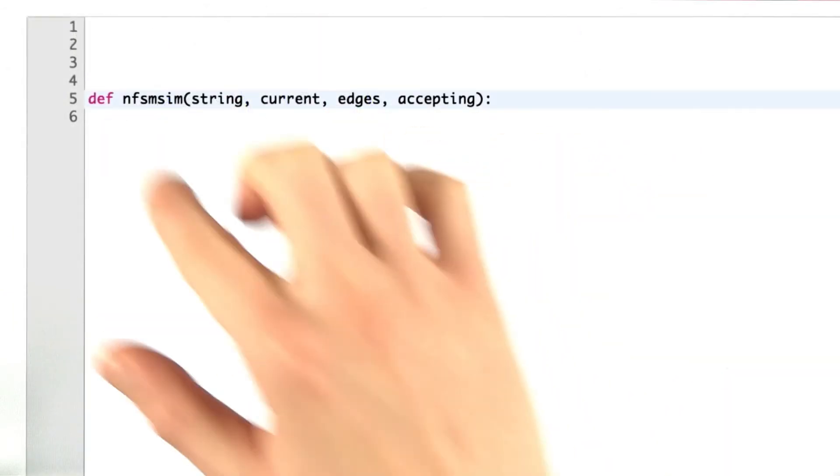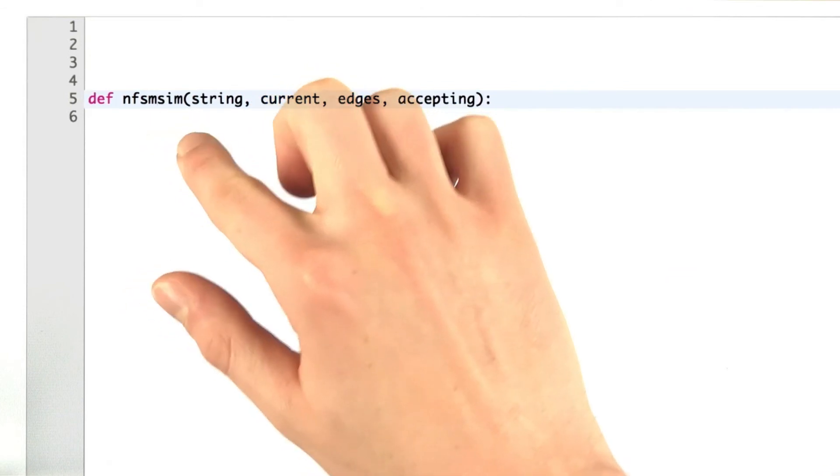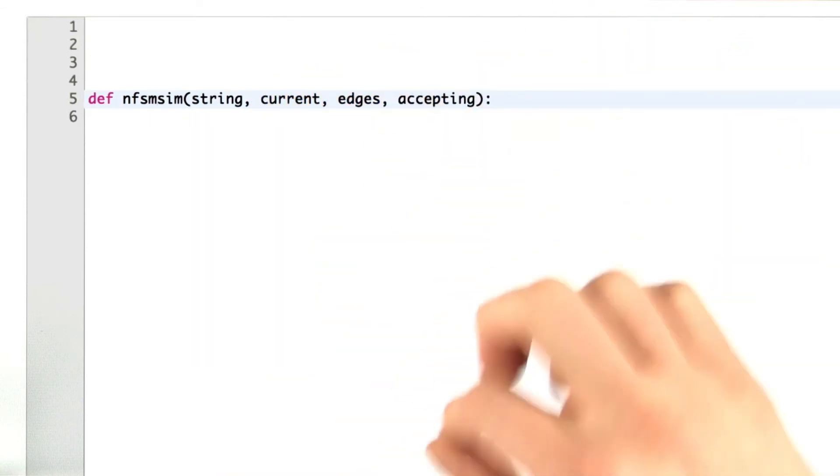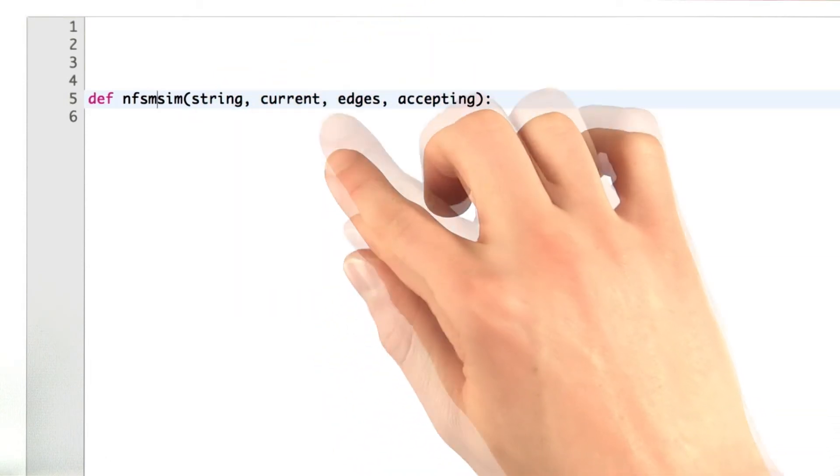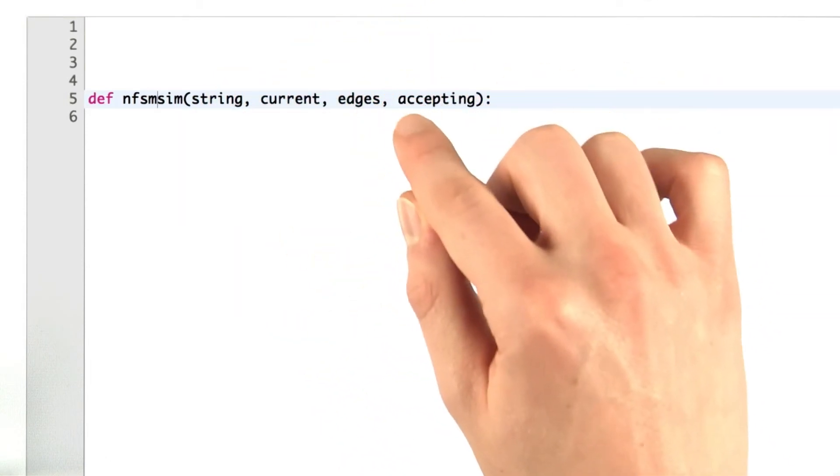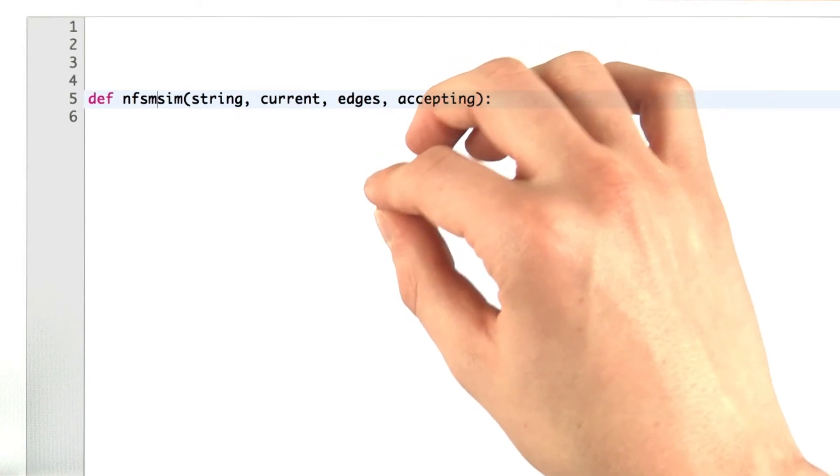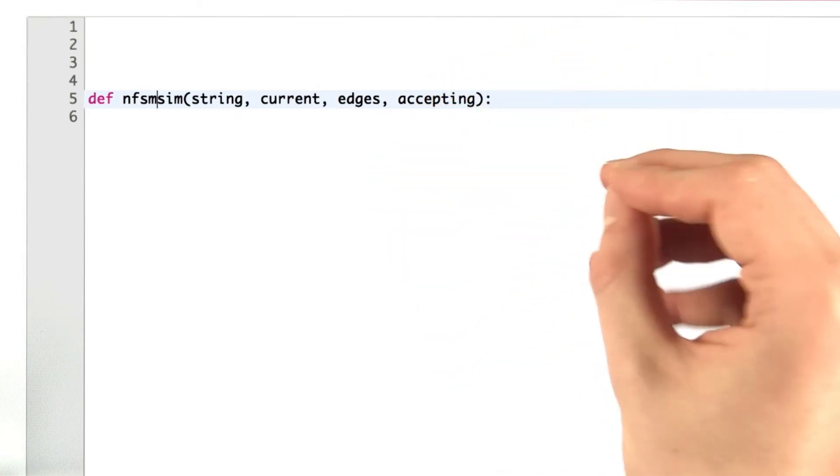So here we have a procedure, the non-deterministic finite state machine simulator. I know that's a mouthful. And we take in 4 parameters: the string on which we're simulating, the current state, the map of edges that represents the state machine, and lastly, a list of the accepting states.